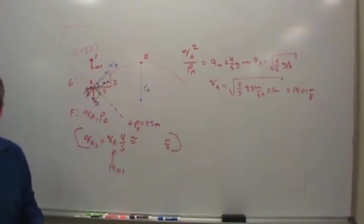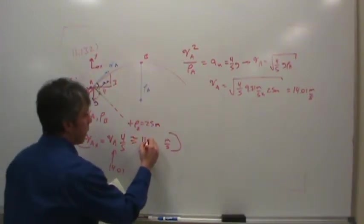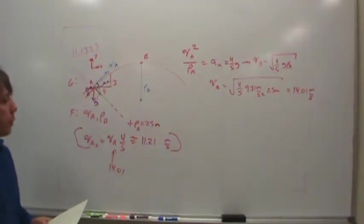Multiply it by four-fifths, and now what do we get for the velocity at A in the x direction? How much? 11.21. 11.21? Okay, thank you. 11.21 meters per second.